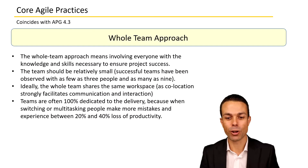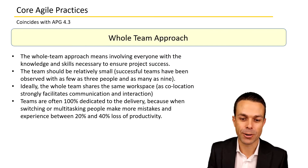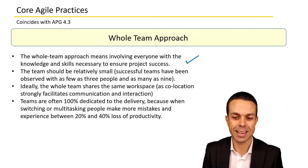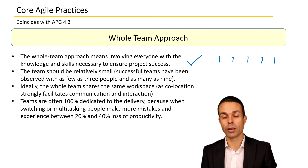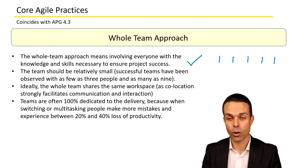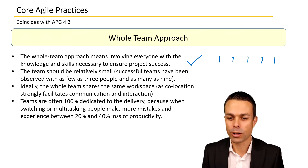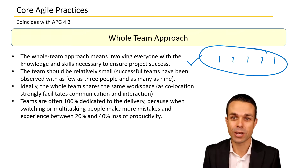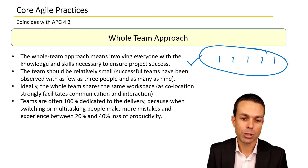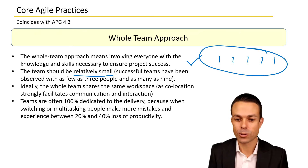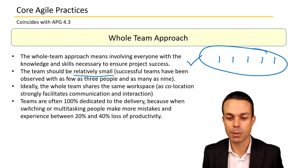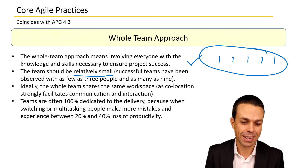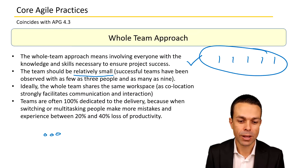The whole team approach means involving everyone with the knowledge and the skills necessary to ensure project success. Instead of gathering different people from all around the organization to work on your project in little bits and pieces, we're including them all in the whole team — so they're 100% dedicated to the project and can really deliver much more quickly. The team should be relatively small; successful teams have been observed with as few as three people and as many as nine. With only three people, the communication channels are much smaller and much easier.